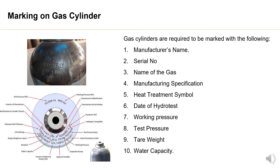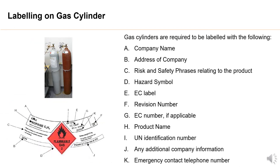Labeling on Gas Cylinder. Gas cylinders are required to be labeled with the following: A. Company Name, B. Address of Company, C. Risk and Safety Phrases Relating to the Product, D. Hazard Symbol, E. EC Label, F. Revision Number, G. EC Number if Applicable, H. Product Name, I. UN Identification Number, J. Any Additional Company Information, K. Emergency Contact Telephone Number.